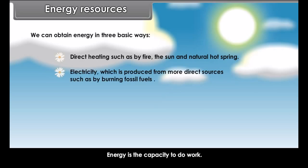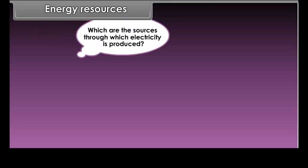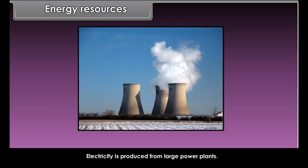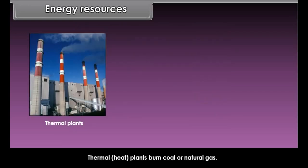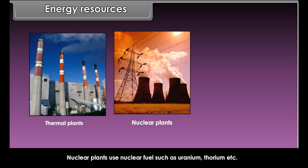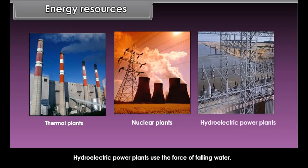Energy resources. Energy is the capacity to do work. Do you know how we can obtain energy? We can obtain energy in three basic ways: 1. Direct heating such as by fire, the sun and natural hot springs. 2. Electricity, which is produced from more direct sources such as by burning fossil fuels. 3. Stored energy in the form of a battery.